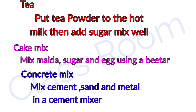Put tea powder to the hot milk, then add sugar and mix well. What is the process of mixing? The instrument used is a spoon. A spoon is a device used for mixing.